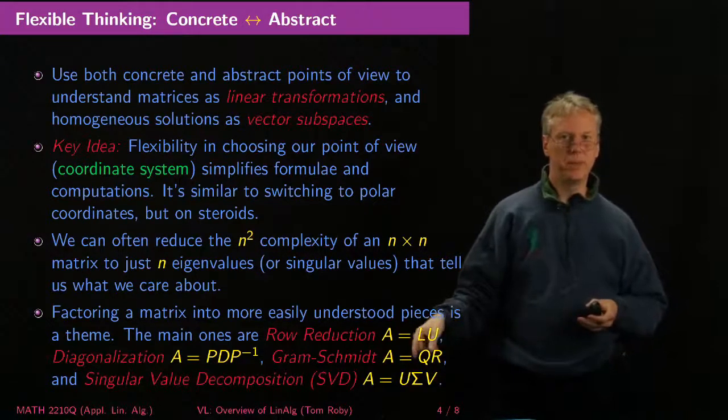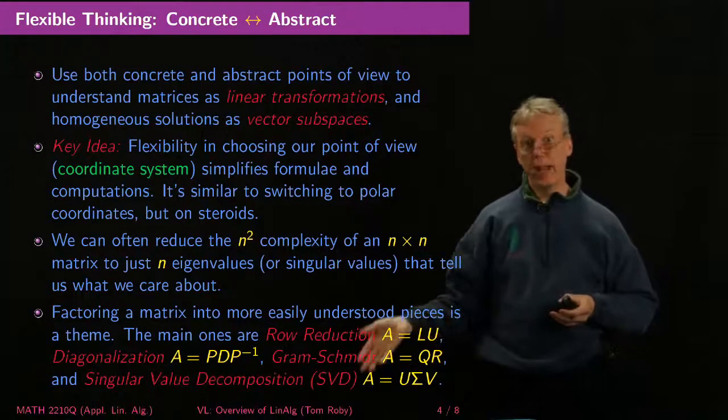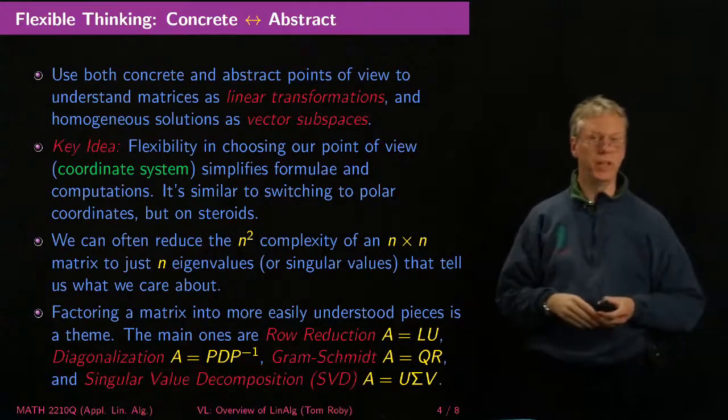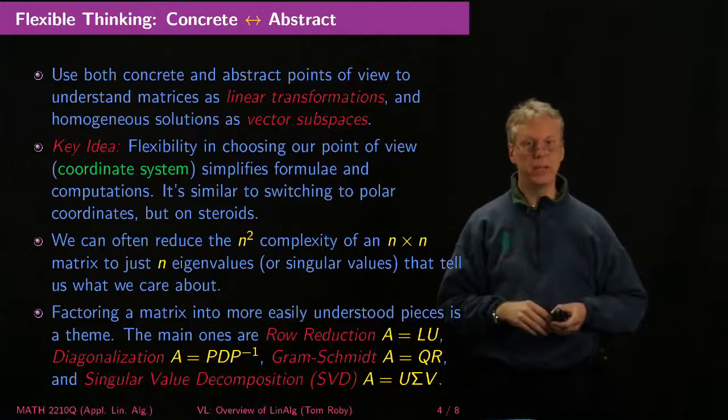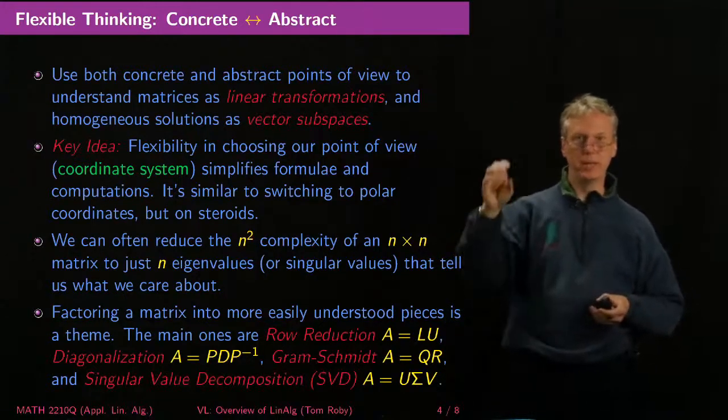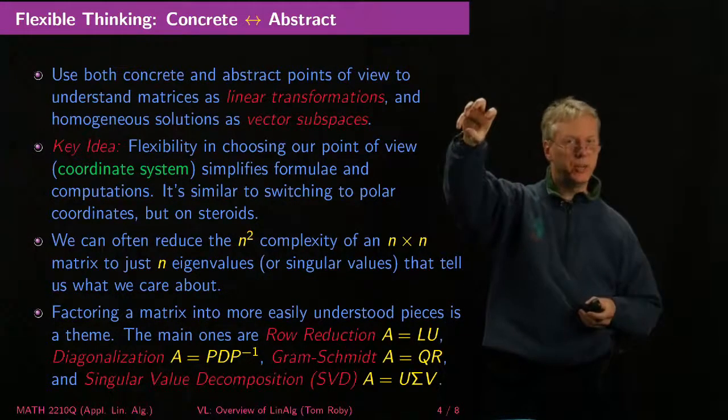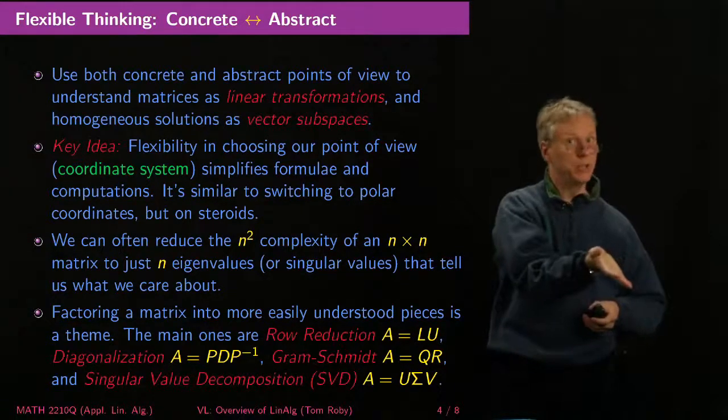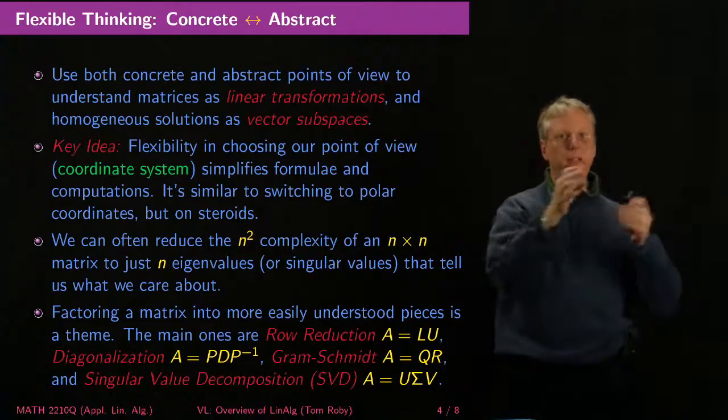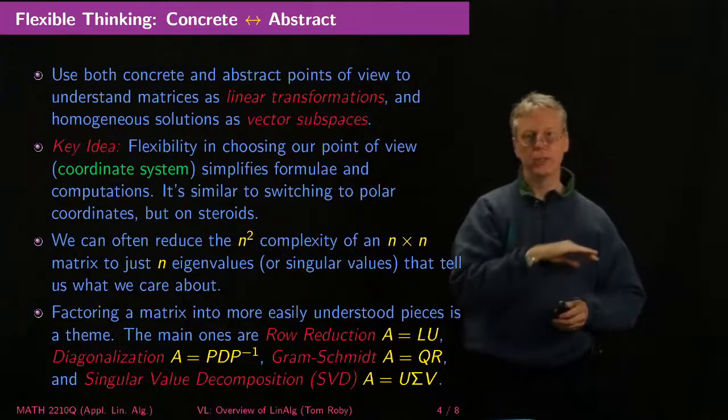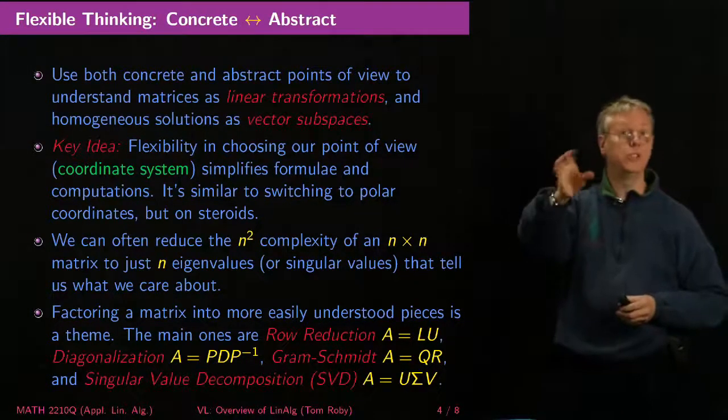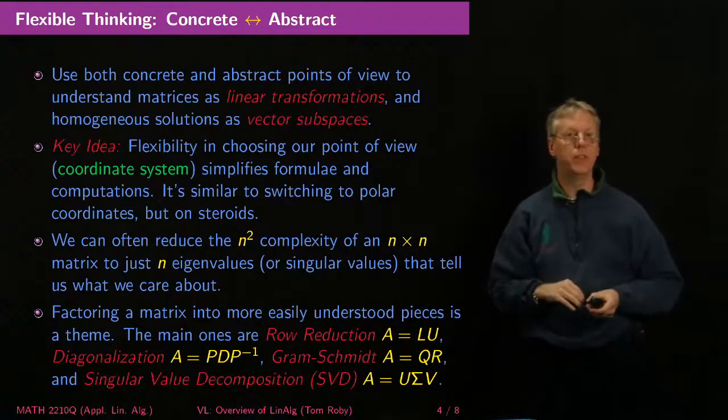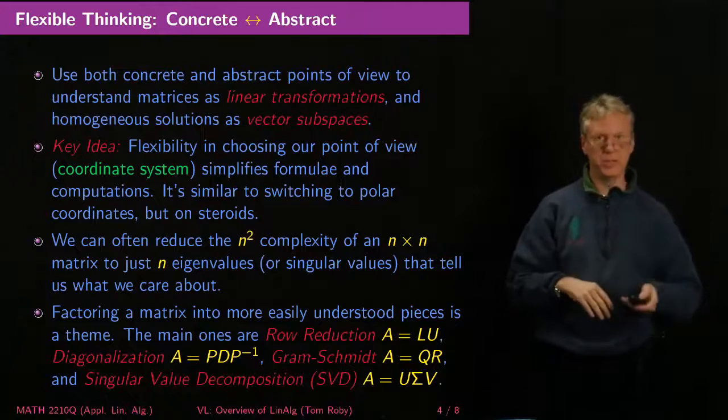Gram-Schmidt splits these things up as an orthogonal matrix times an upper triangular, and the SVD, arguably the most useful thing that people use in applications, splits a matrix up as some kind of rotation, basically an orthogonal matrix, followed by something that's basically a diagonal matrix, block diagonal matrix but rectangular, and then another matrix which is also just a rotation or maybe a reflection or orthogonal matrix. And so that makes it much easier to understand than if all we have is the original matrix with its n-squared entries.